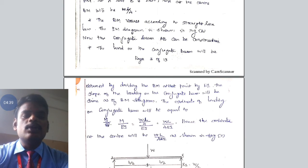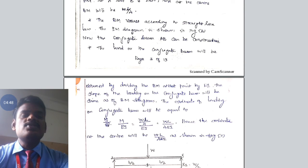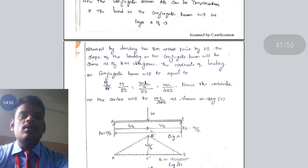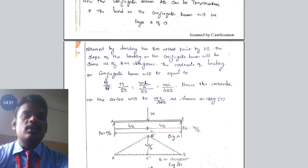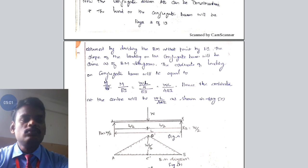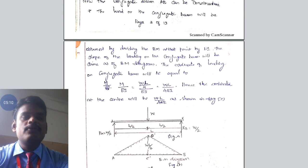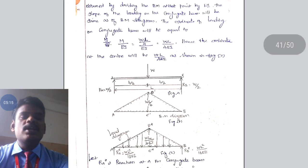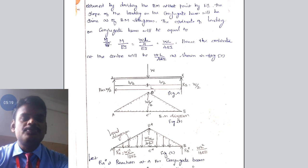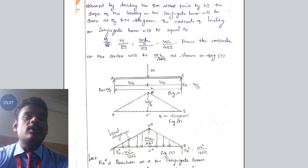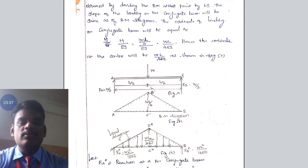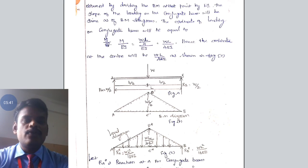When the beam is subjected to a point load, the bending moment follows the straight line law. The load on the conjugate beam is equal to the bending moment at that point divided by the flexural rigidity EI. The maximum bending moment value is WL by 4. Dividing this by EI, we get the loading value for the conjugate beam. So M by EI equals WL/4 divided by EI, which gives WL divided by 4EI. Therefore, WL by 4EI is the loading value for the conjugate beam.